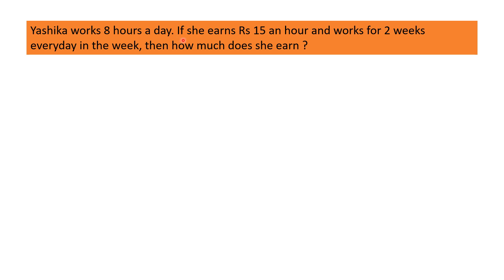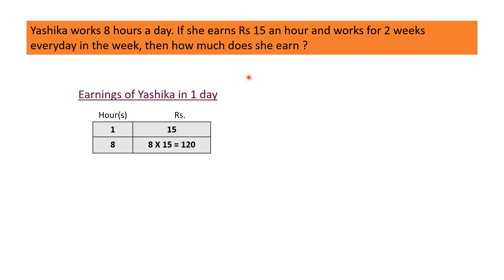Yashika walks 8 hours a day. If she earns Rs.15 an hour and walks for 2 weeks every day of the week, then how much does she earn? In one day, Yashika walks for 8 hours and earns Rs.15 an hour. In one hour she earns Rs.15, so in 8 hours she will earn 8 into Rs.15, that is Rs.120. We take 8 hours because Yashika walks 8 hours in a day, so she gets paid for 8 hours.